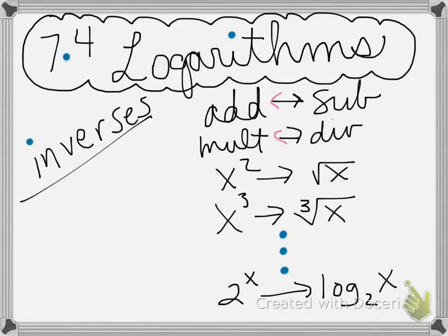If you have x squared, then the square root of x will get rid of it, and vice versa. If you have x cubed, the cube root of x gets rid of it, and vice versa. So how do we get rid of 2 to the x, or 3 to the x, or e to the x? How do we get rid of a number where the variable is in the exponent? Well, the opposite of that is going to be a logarithm.